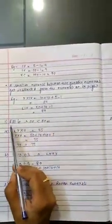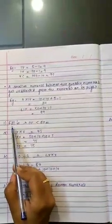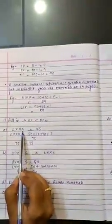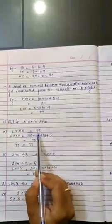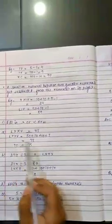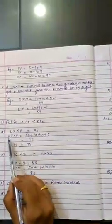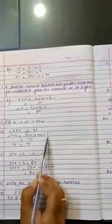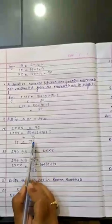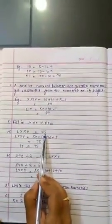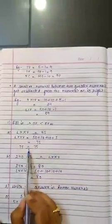Now, some questions. Question number 1: Fill in with less than, greater than or equal to sign. For example, LXXXV and this have to be compared with 75. Solve this in Hindu Arabic numeral. The value of L is 50, X is 10, X is 10, V is 5. 50 plus 10 plus 10 plus 5, the answer comes 75. And on the right hand side, the value is 75. So, equal to sign will be there.